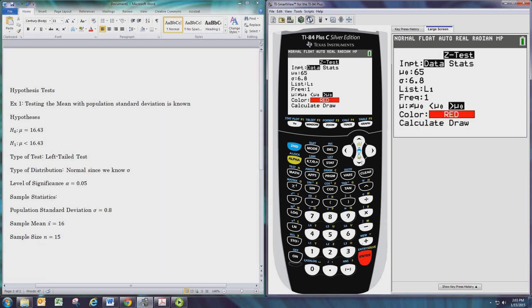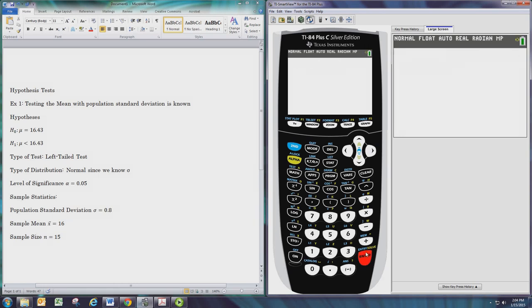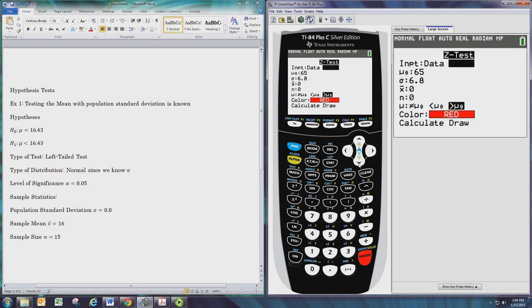If you had a set of data you could put those in the list editor and then use the data version. We have summary statistics, so we will select stats. This first entry, mu sub 0, is the number that shows up in the hypotheses. In this case it's 16.43.